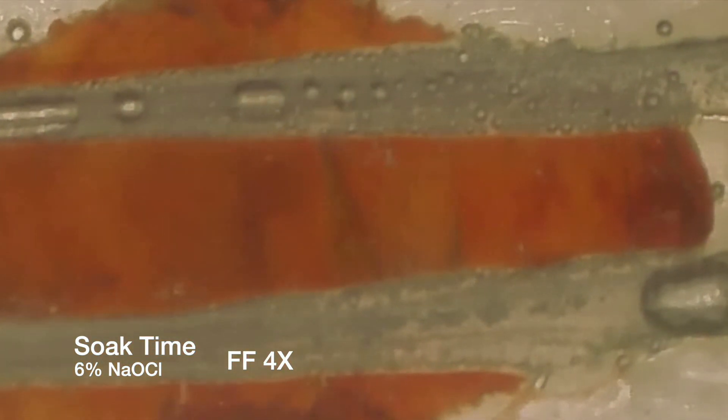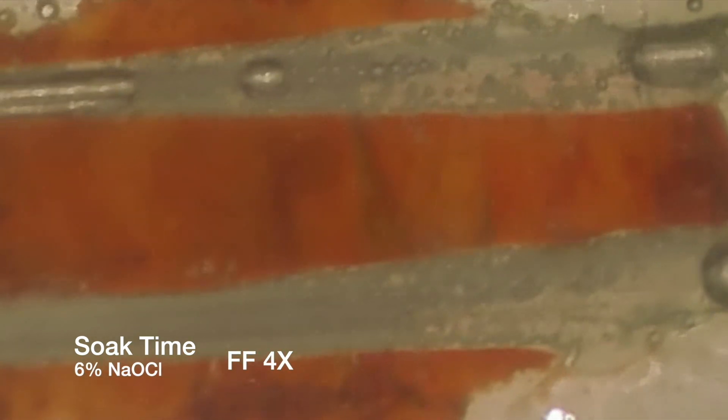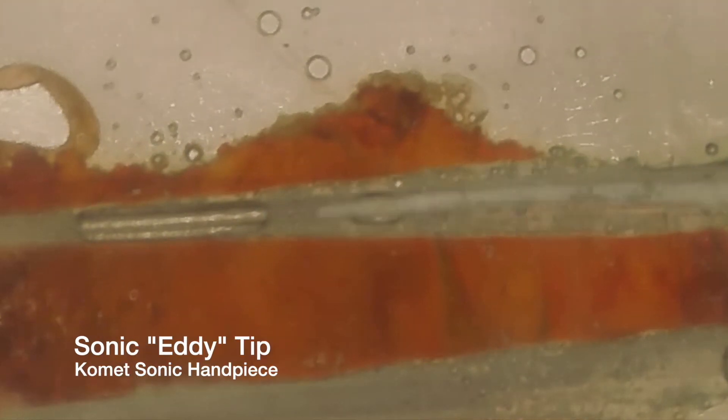If you're going to do passive irrigation, this is one way to do it. Most of us, I think, do the activation at the start and then depend on soaking for the 30 to 40 minutes that we know it takes in a root canal.